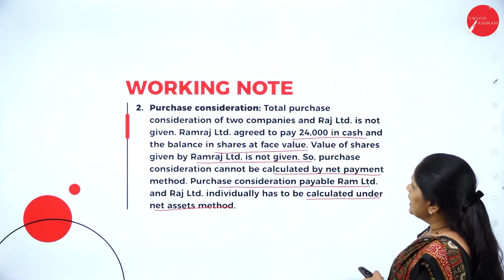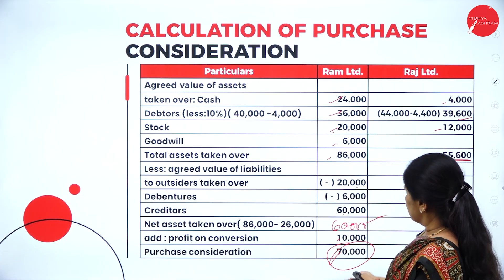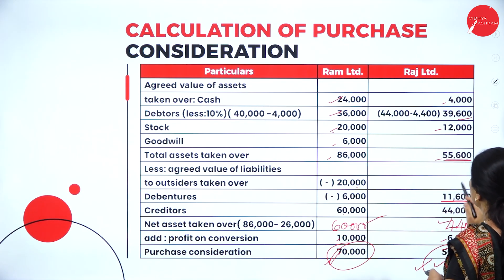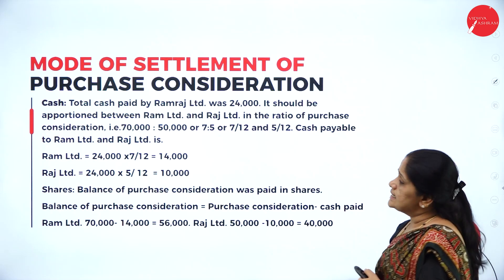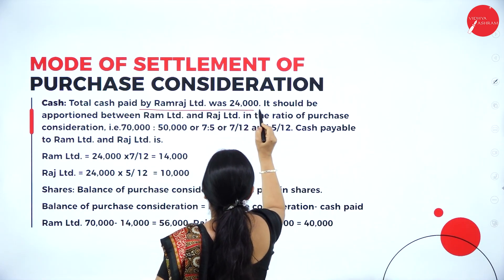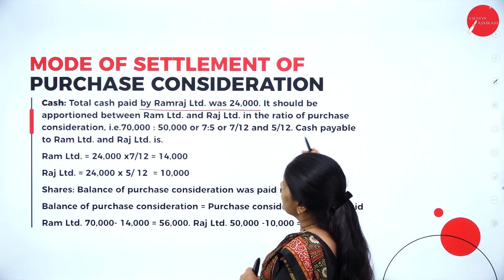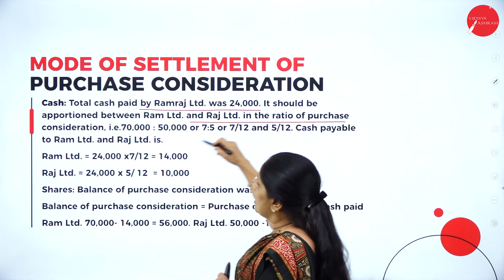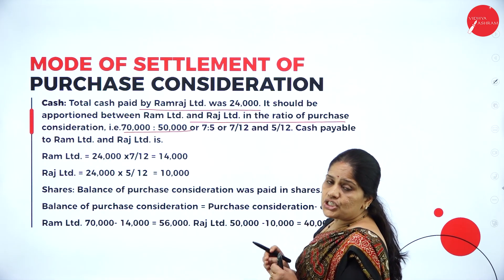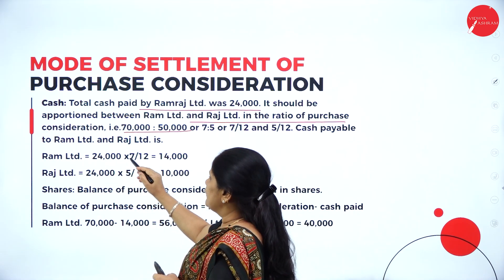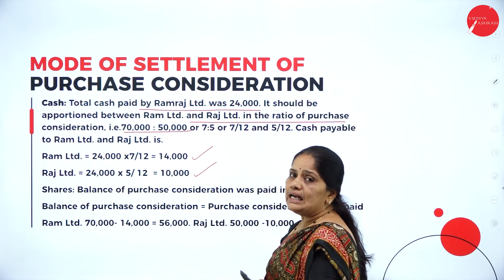Regarding the purchase consideration: Ramaraja Limited agreed to pay 24,000 in cash and the balance in shares. Ram Limited gets a purchase consideration of 70,000 and Raj Limited gets 50,000. The total cash of 24,000 is apportioned between Ram and Raj Limited in the ratio of their purchase consideration. When calculated on this basis, Ram Limited receives 14,000 in cash and Raj Limited receives 10,000 in cash.